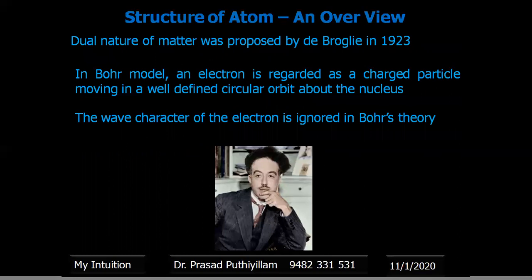Before that, the dual nature of matter was proposed by de Broglie in 1923. In Bohr's model, the electron is regarded as a charged particle moving in a well-defined circular orbit around the nucleus — only the particle nature was considered. However, any particle also behaves as a wave, and therefore the wave character of the electron was ignored in Bohr's theory.